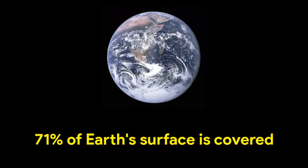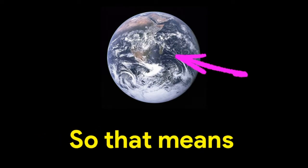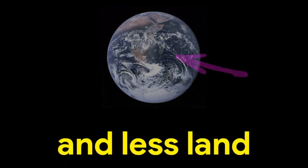71% of Earth's surface is covered in water. So that means there is more water and less land.